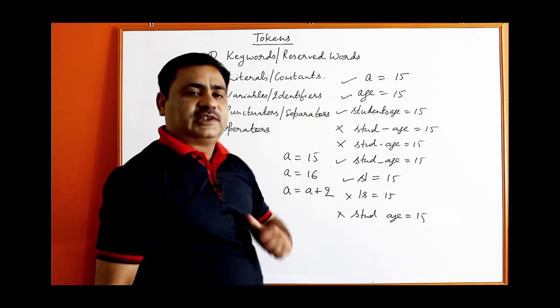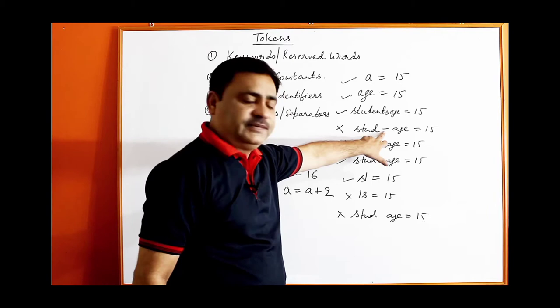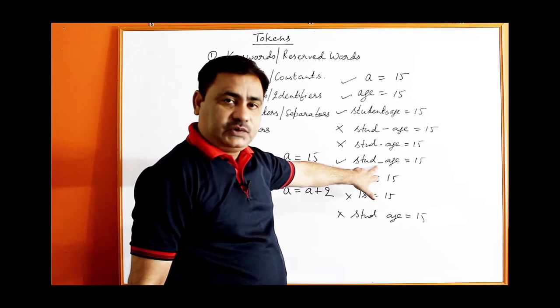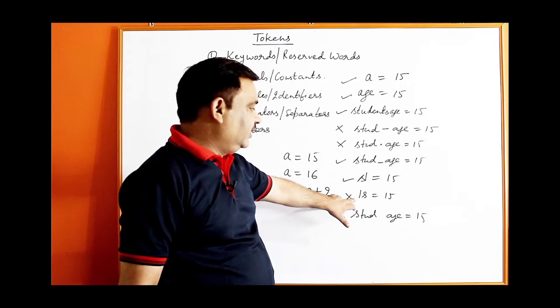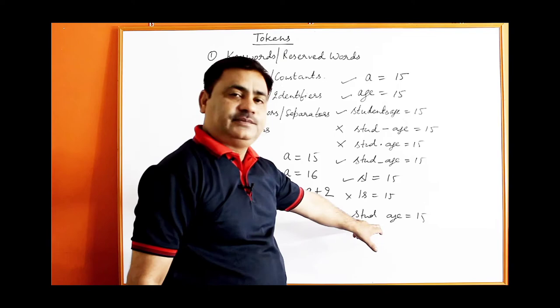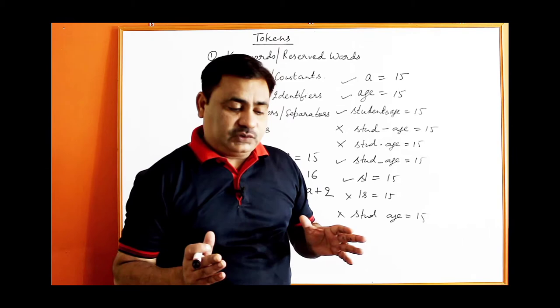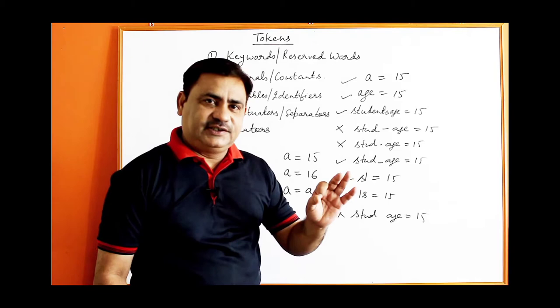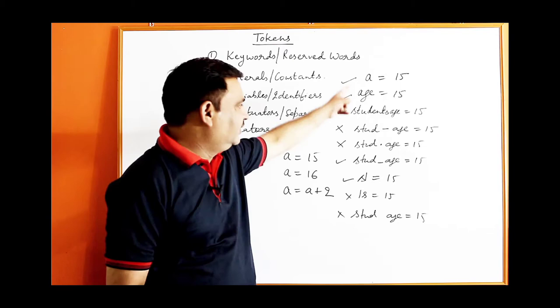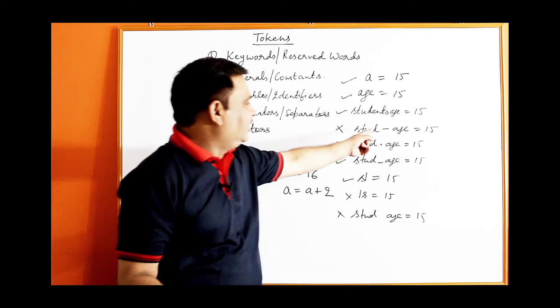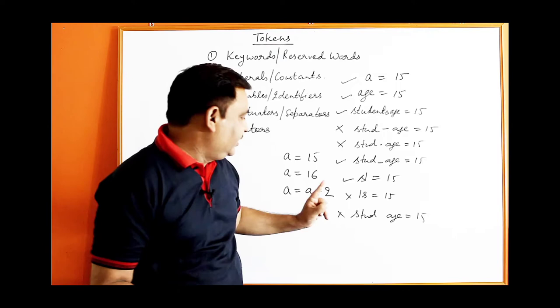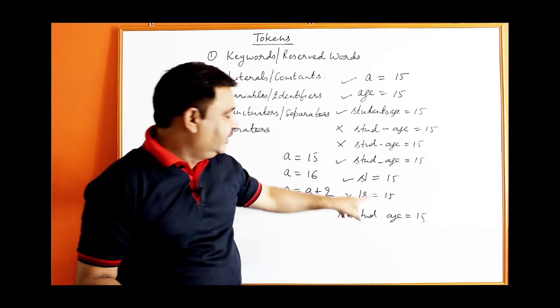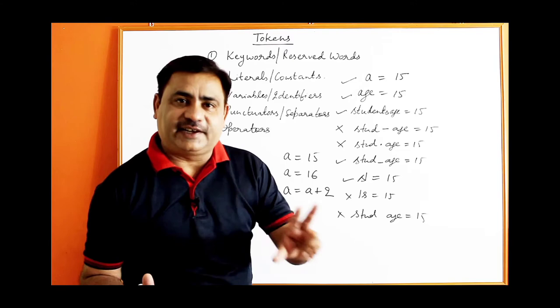Some variable names are incorrect because: a dash cannot be used, a dot cannot be used, but an underscore can be used. A digit can be used but not as the first character — that's why 1s is wrong but s1 is right. A space is not allowed. So there are five rules: first, only four types of characters can be used — alphabets, digits, underscore, and the dollar sign.